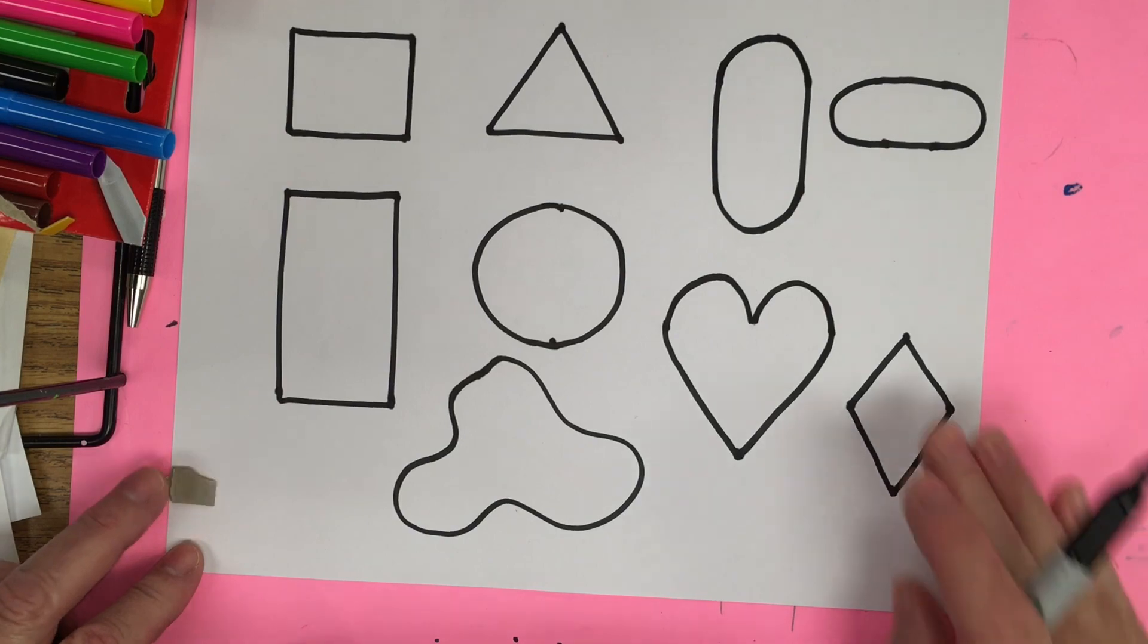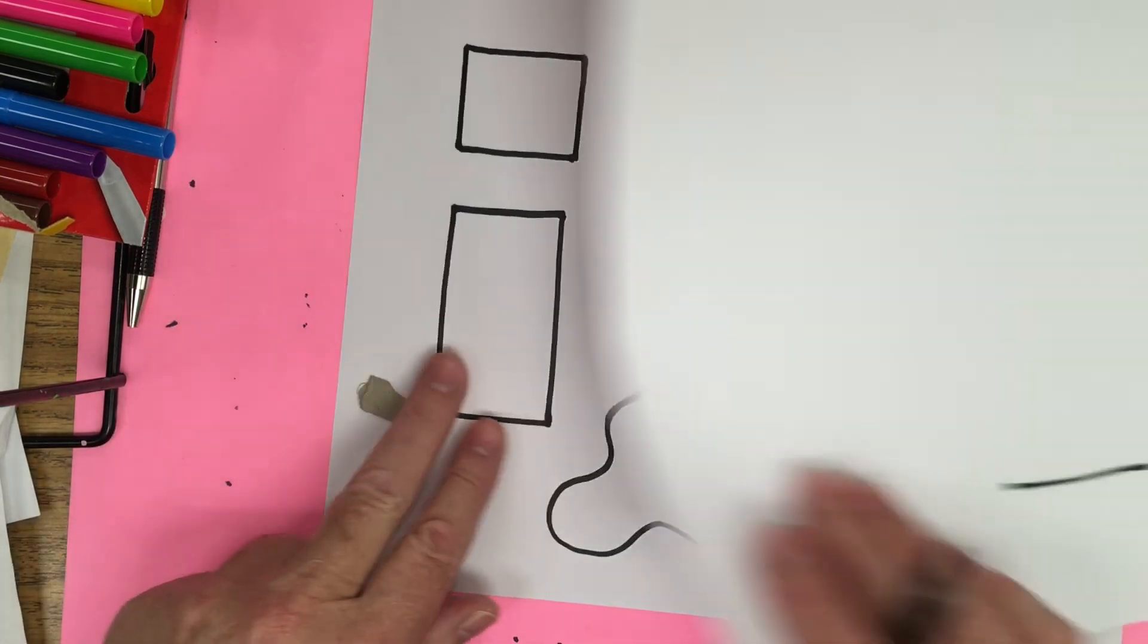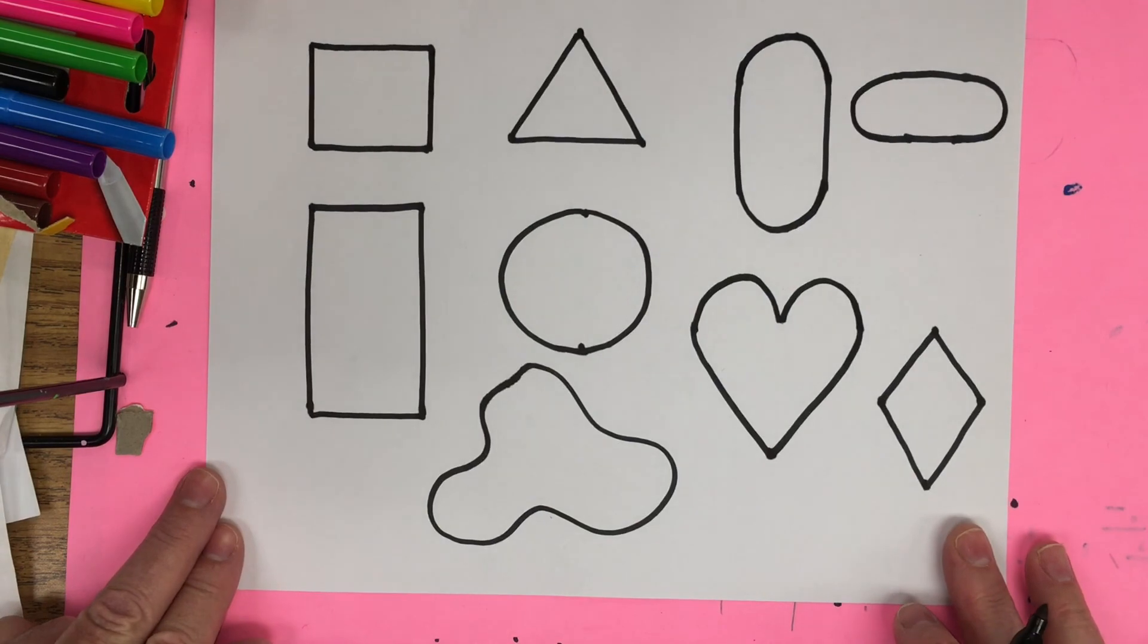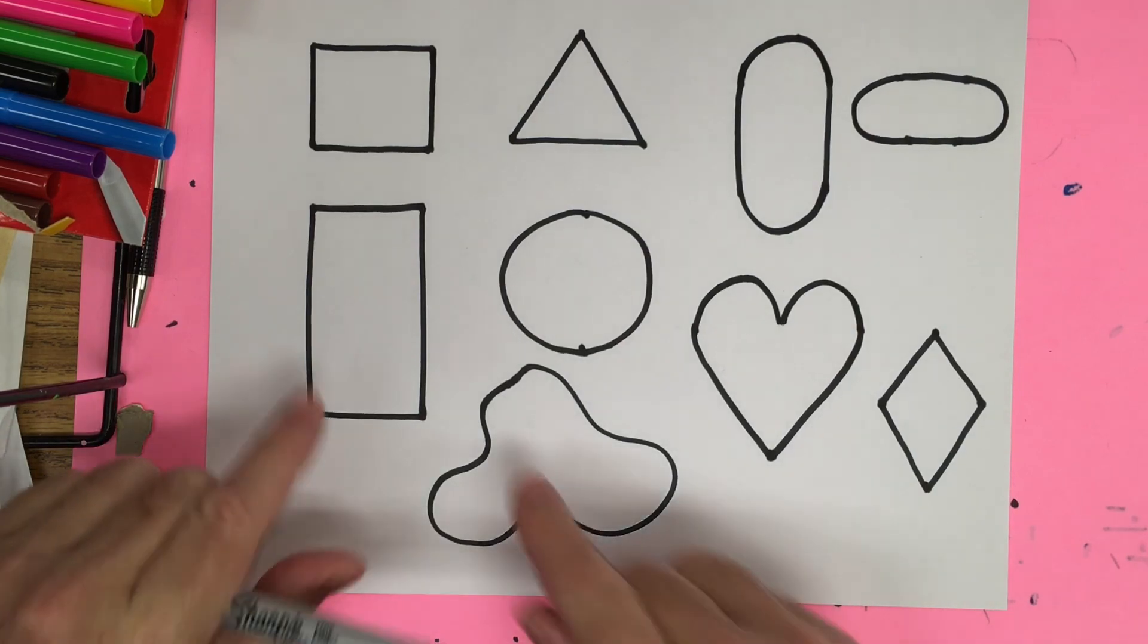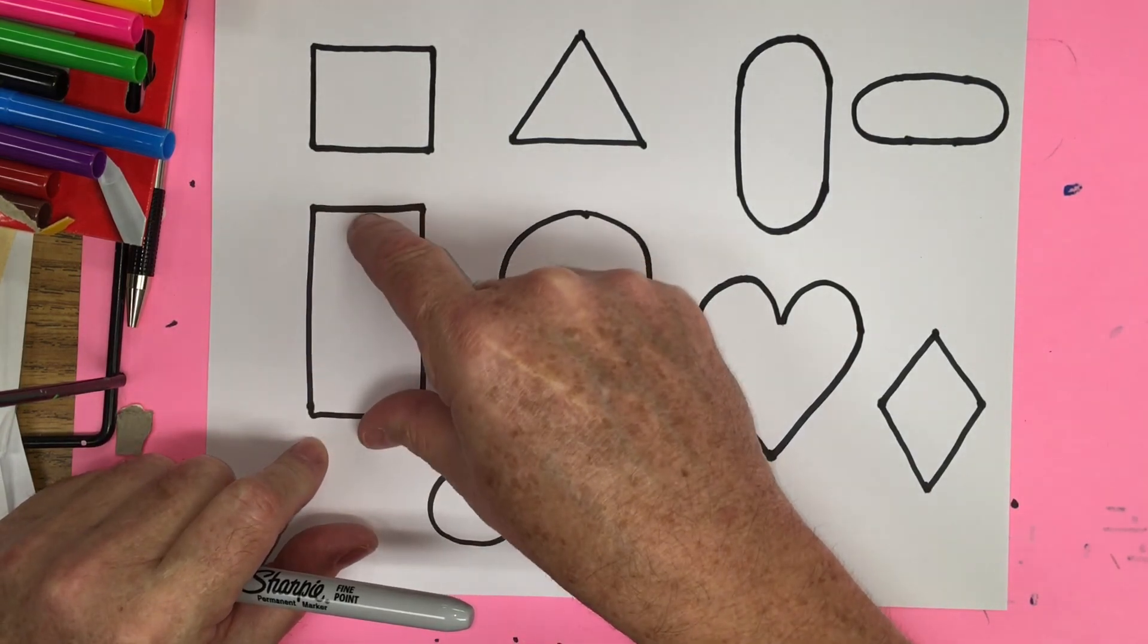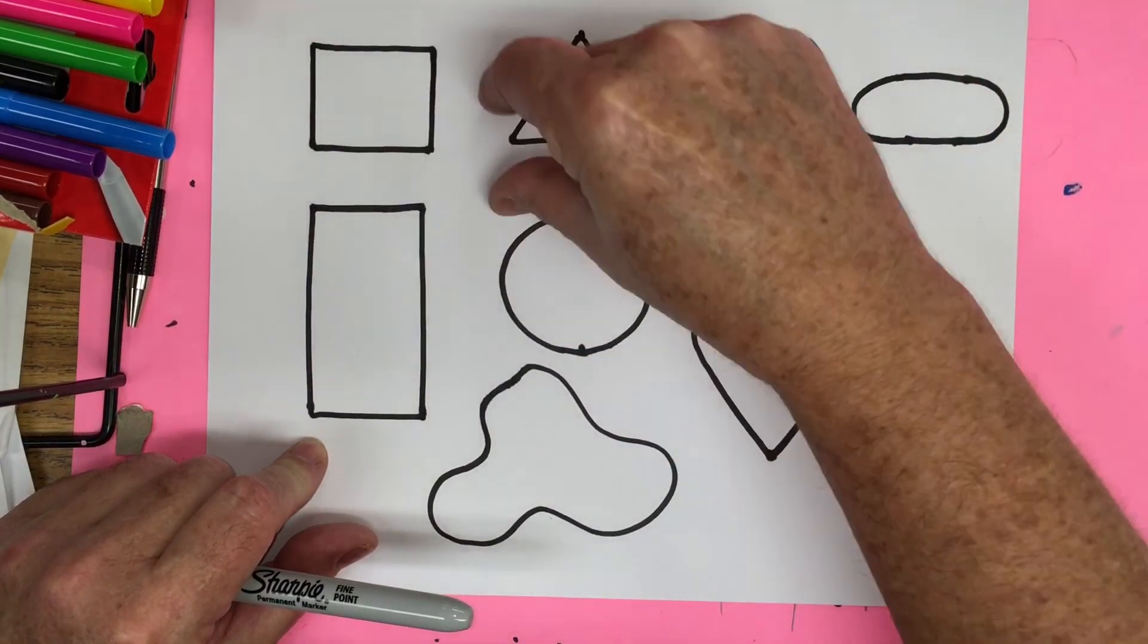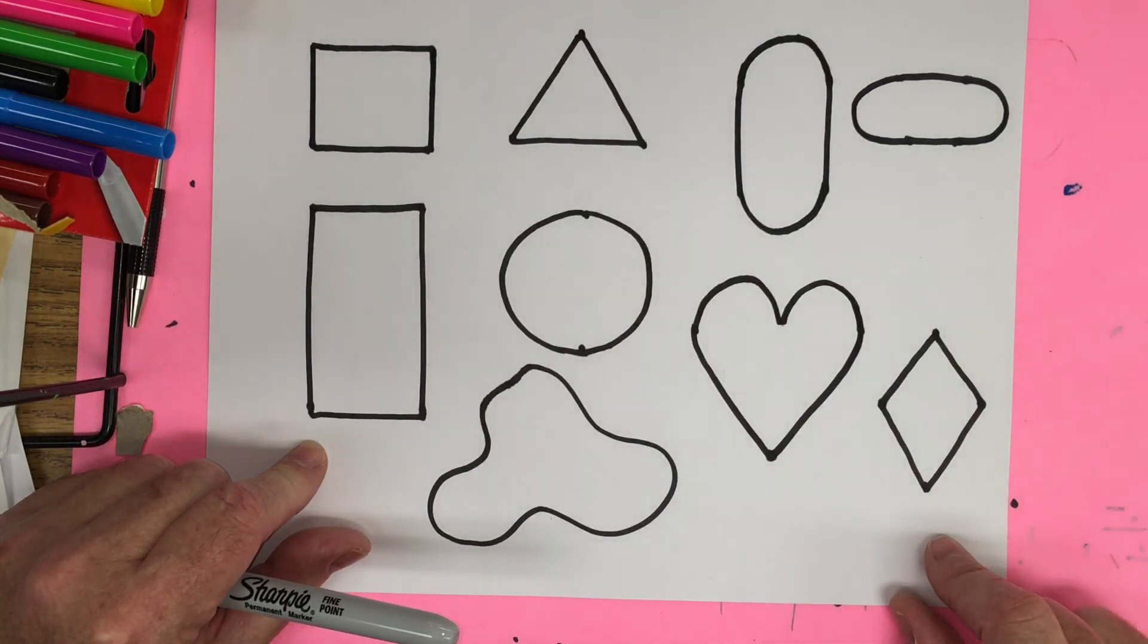Now what I want you to do is to practice making these shapes on a scrap piece of paper. And then what you're going to do is you're going to put the shapes together to form a picture. And then you'll color it in or decorate it any way you want. For example, if you think about what happens if I take a rectangle and put a bunch of them in a row and maybe put a few triangles on top, it could form buildings or a city. So use your imagination.